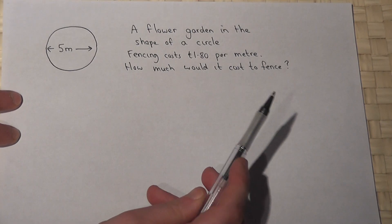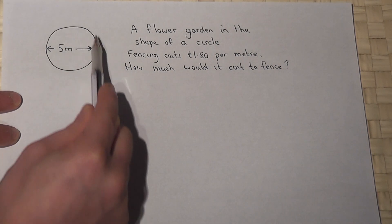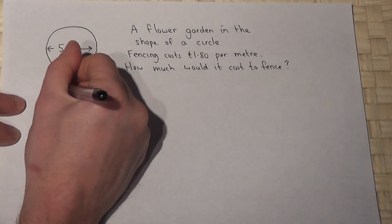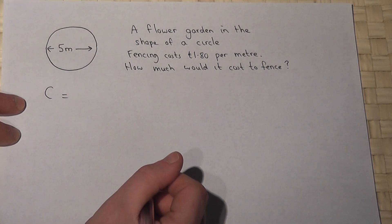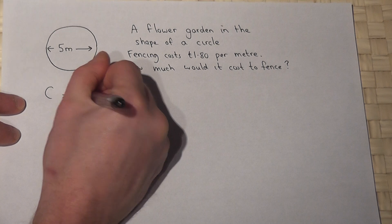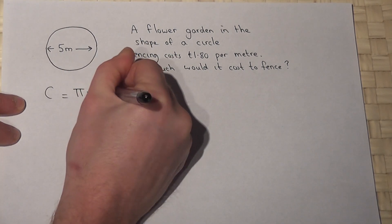Now then, the amount of fencing required will be the same as the circumference of the circle. Now the circumference of the circle is given by 2 times pi times r, or pi times d. Now we know the diameter, so the circumference is pi times d,